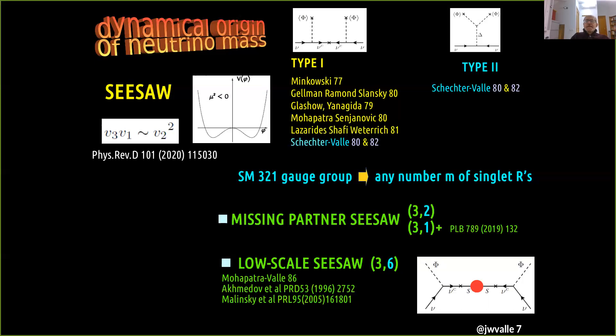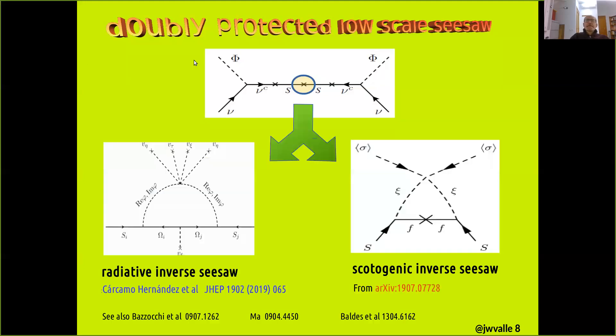This low-scale seesaw is completely natural in 't Hooft's sense, since when we make the seed of lepton number violation go to zero, the theory, electron number is restored, the theory acquires a larger symmetry which makes neutrinos massless. So one says neutrino masses are symmetry protected. In fact, the symmetry protection can be a double one if the blob associated to lepton number breaking is itself calculable in terms of radiative corrections associated to yet another layer of new physics.